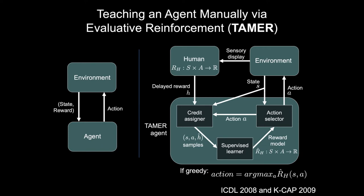The agent is acting in the environment, and the human is giving delayed human feedback. There are three main modules the TAMER agent has. The first is the credit assigner module, which exists because people can't react instantaneously — there will be some delay. The credit assigner roughly takes a feedback signal and spreads it around on recent state-action pairs, producing a supervised learning sample where the input is a state and an action, and the output is the human feedback after modification from the credit assignment.